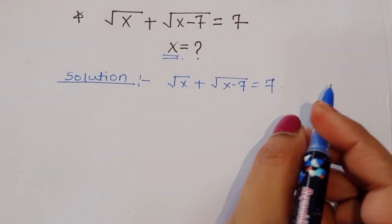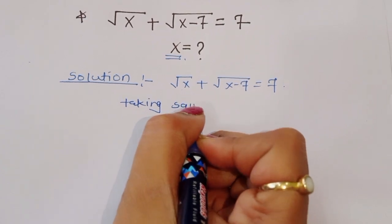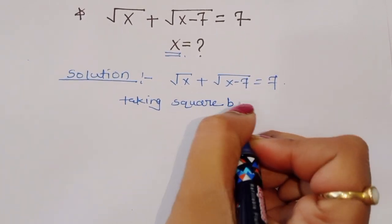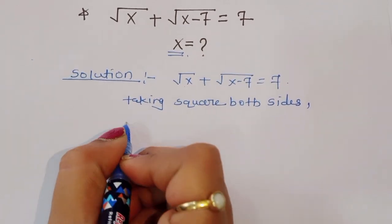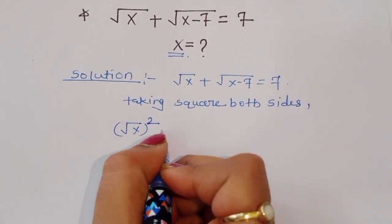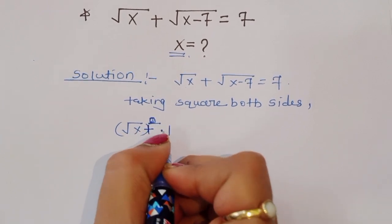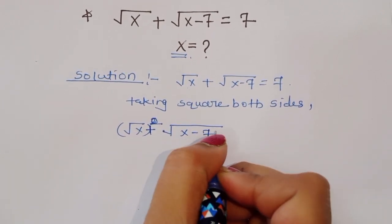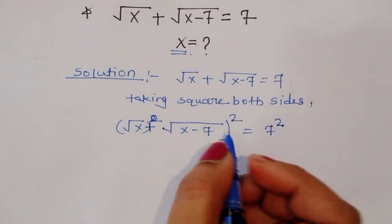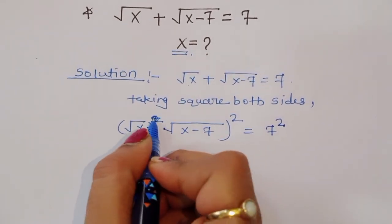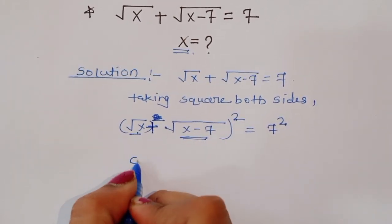Now we can do one thing: take the square of both sides. We will get square root of x plus square root of x minus 7, whole square, is equal to 7 squared.